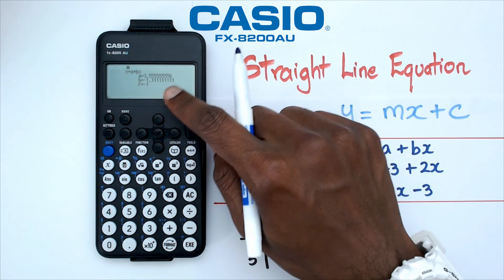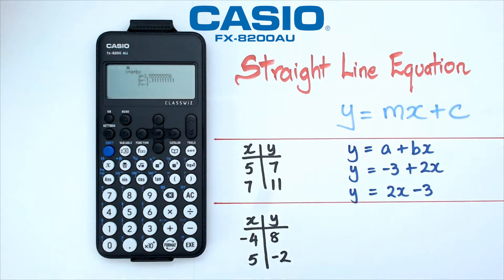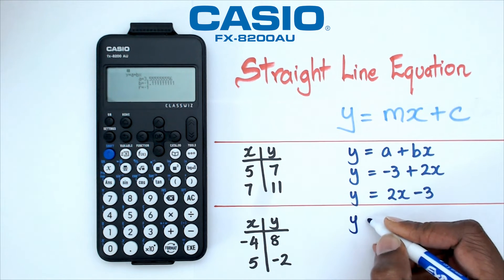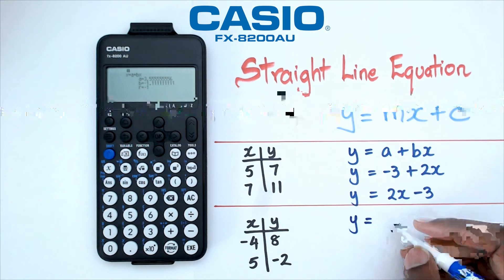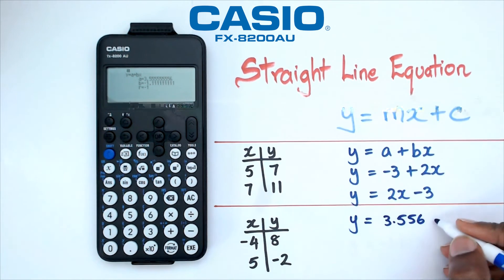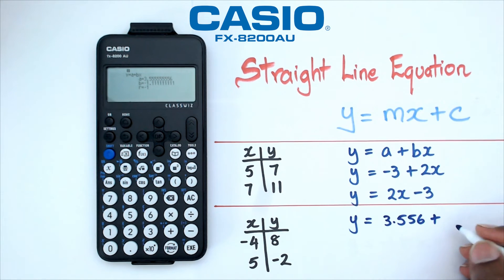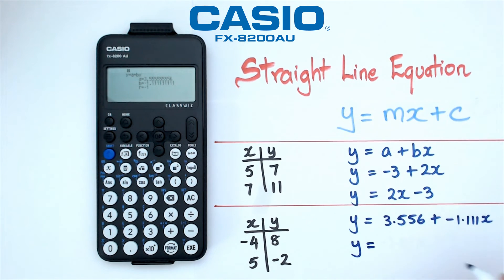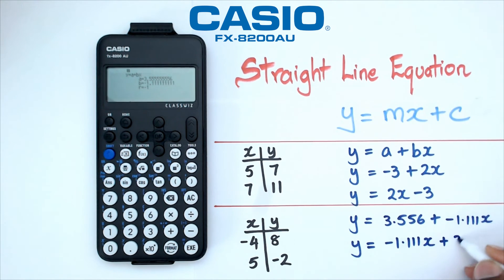And as you can see, I've got y equals a plus bx — I'm going to click on that again. And this time I am getting a very, very horrible number. Sometimes you are not going to get pretty numbers with your straight line equation. For this particular equation, a is equal to 3.556, plus negative 1.111x. Rewriting this in y equals mx plus c format, we get negative 1.111x plus 3.556.